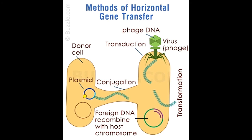Natural mechanisms of horizontal gene transfer include transformation, transduction, and bacterial conjugation. Vertical gene transfer occurs through reproduction. Artificially, horizontal gene transfer is achieved via genetic engineering using plasmids and viral vectors, while vertical gene transfer involves progeny produced from genetically modified organisms (GMOs).